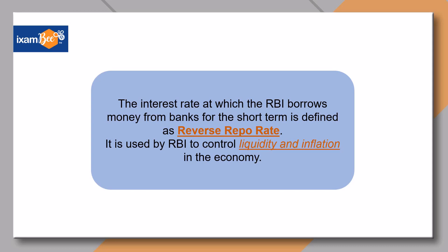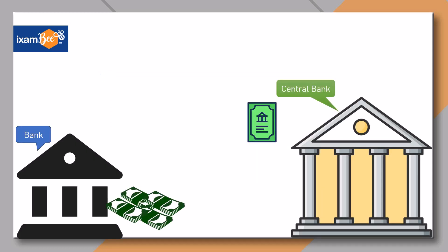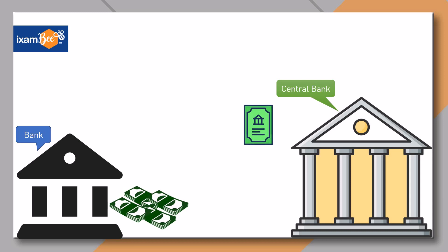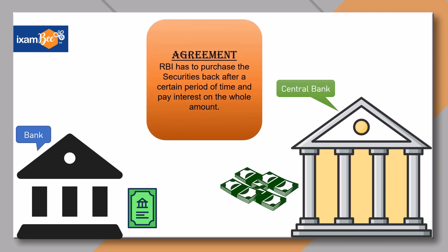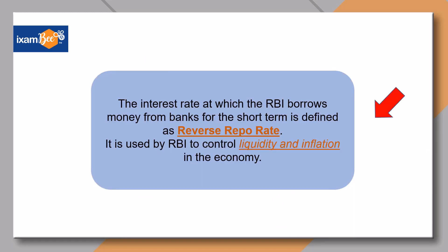Let us understand this with an example. In the process of a reverse repo operation, the central bank borrows money from the banks and in return provides securities. Just like repo operations, reverse repo operations also come with an agreement — the RBI has to purchase the securities back after an agreed period of time and pay interest, i.e., the reverse repo rate, on the whole amount.